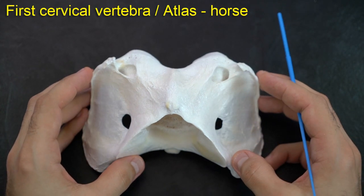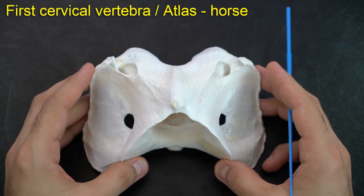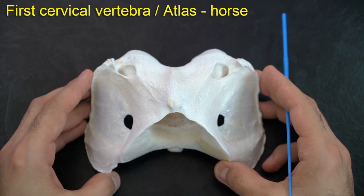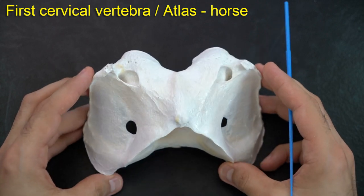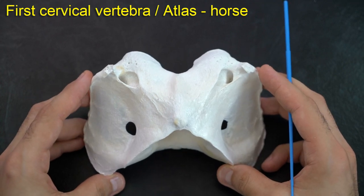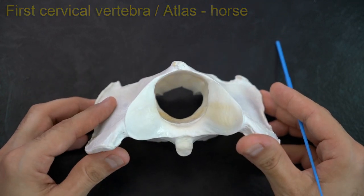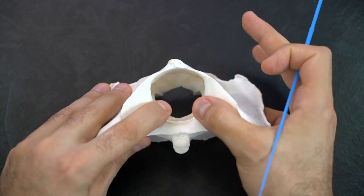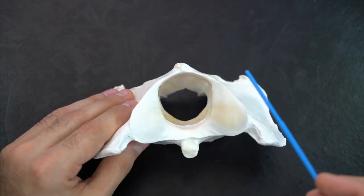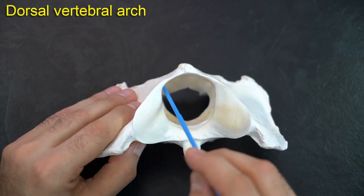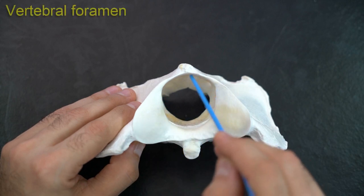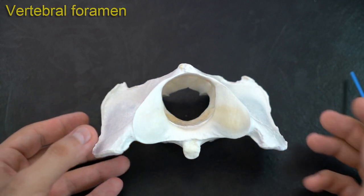Here we have the atlas of the horse. The first thing we have to say is that the atlas has its own specific shape and doesn't look like a typical cervical vertebra. In the caudal view, we can see that there is no body — the atlas doesn't have a body. There are two lateral masses, connected dorsally by the dorsal arch and ventrally by the ventral arch, forming the vertebral foramen.